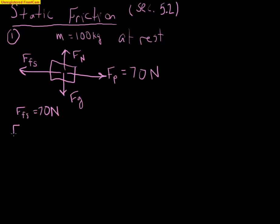One thing to keep in mind is the equation for the force of static friction: it's less than or equal to the coefficient of static friction times the normal force. This is only useful if we know that our force of static friction is equal to this quantity, meaning the force of static friction is at its maximum value. We don't have enough information here to use this equation to solve for the coefficient of friction, because we don't know that this is the maximum value of static friction.